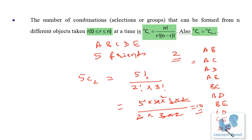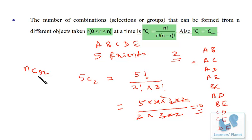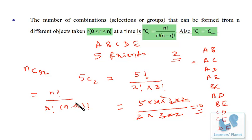Solving it: five factorial is 5×4×3×2, two factorial is 2, and three factorial is 3×2, giving us ten combinations. So if we have n objects and have to select r objects, the formula is nCr. The expansion of nCr is n factorial over r factorial into (n minus r) factorial. Memorize this formula: nCr = n! / (r! × (n−r)!). This represents selection only.